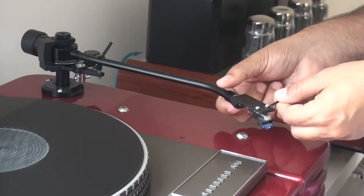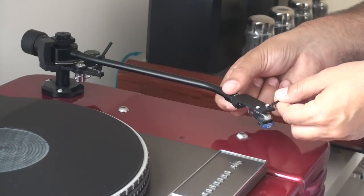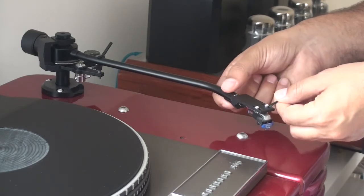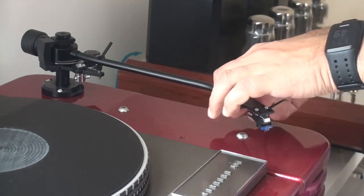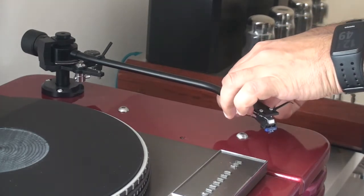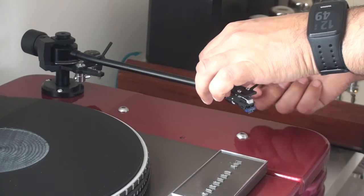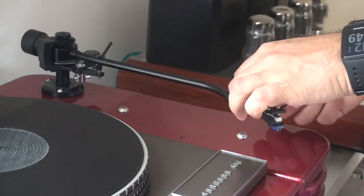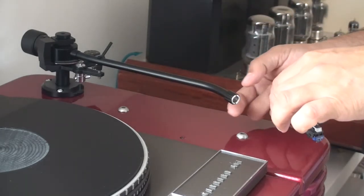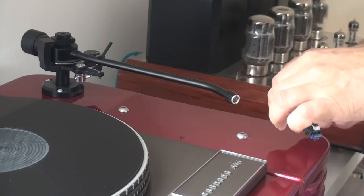You simply unscrew the mounting point here for the headshell, and then holding the headshell firmly in your hands, you just pull it away from the tone arm itself and it will come out quite nicely.